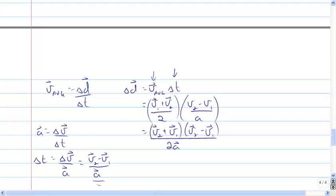We call this the difference of squares. When I have (A plus B) times (A minus B) and I FOIL this, I get V2 times V2 — that's V2 squared — plus V2 times negative V1, giving negative V1·V2, then the inside gives positive V1·V2. The negative and positive V1·V2 cancel each other out, and the last term gives negative V1 squared. So what I end up with is V2 squared minus V1 squared, all over 2A.